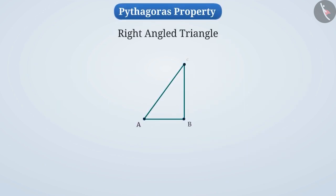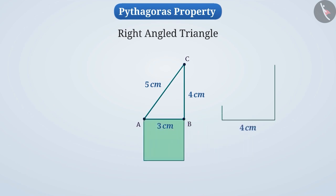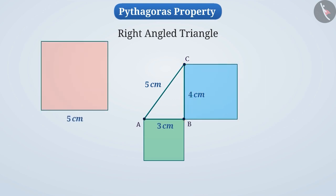Here is a right angle triangle ABC with the measure of the hypotenuse AC as 5 cm; among the remaining sides, AB measures 3 cm and BC measures 4 cm. We will draw a square with side 3 cm and place it along the 3 cm side of the triangle. Similarly, we will draw another square with side 4 cm and place it along the 4 cm side, and a square with side 5 cm placed along the 5 cm side of the triangle.